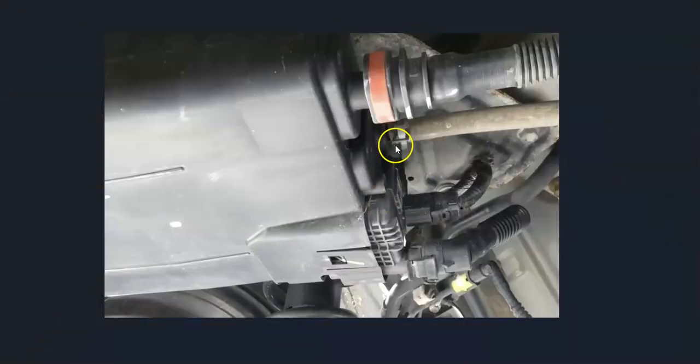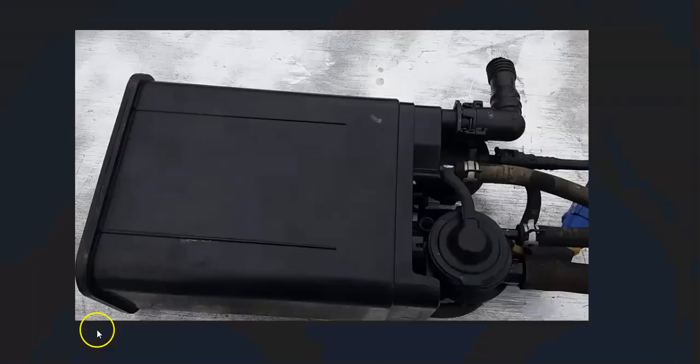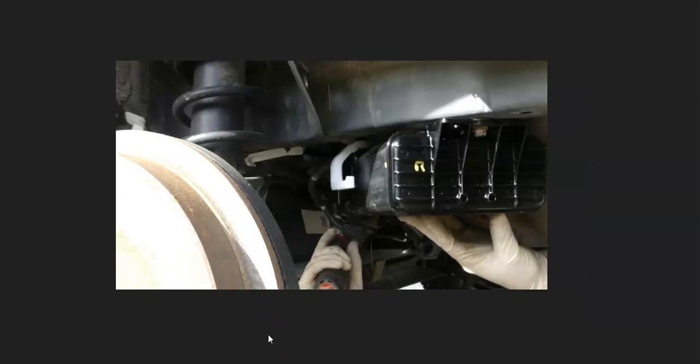If the gas cap looks good and the purge valve tests good, then the next thing that can cause this problem is the charcoal canister, which usually also contains a vent valve. If that vent valve goes bad, it could cause issues. The charcoal canister and vent valve are located underneath the vehicle by the gas tank somewhere.